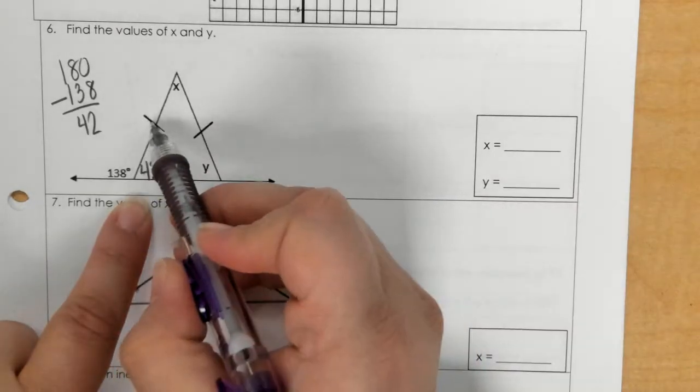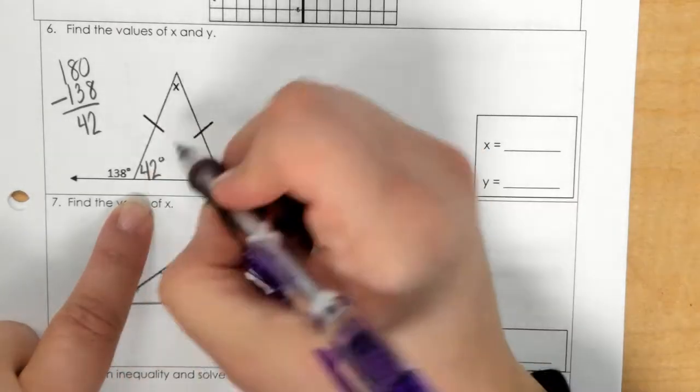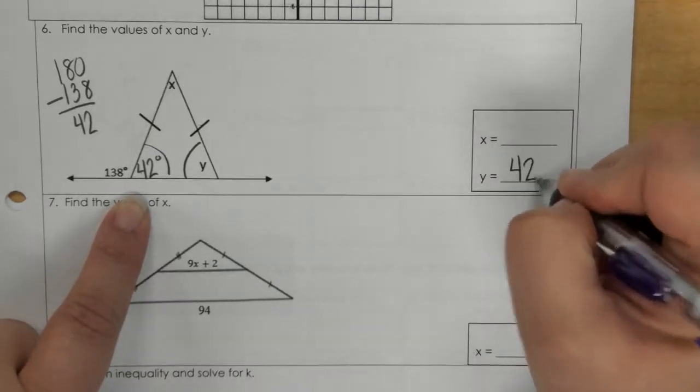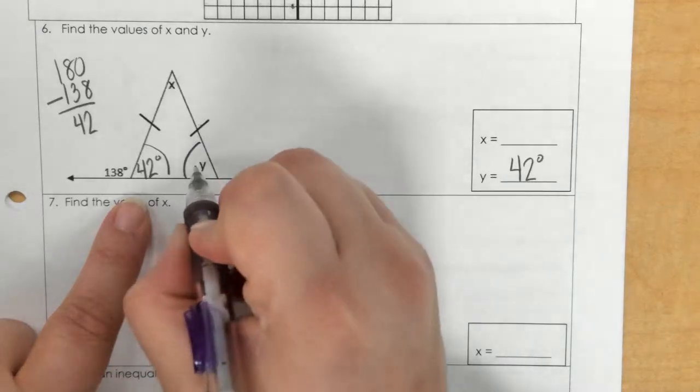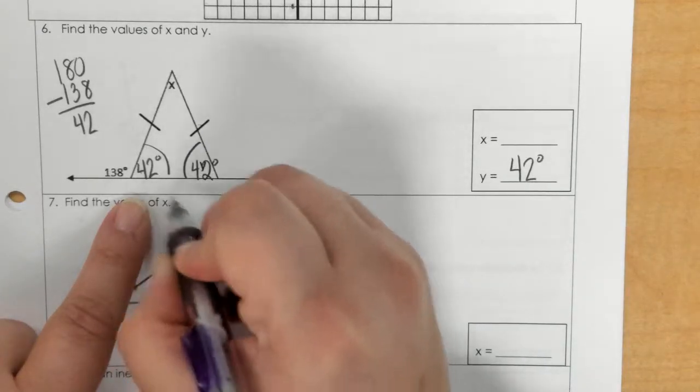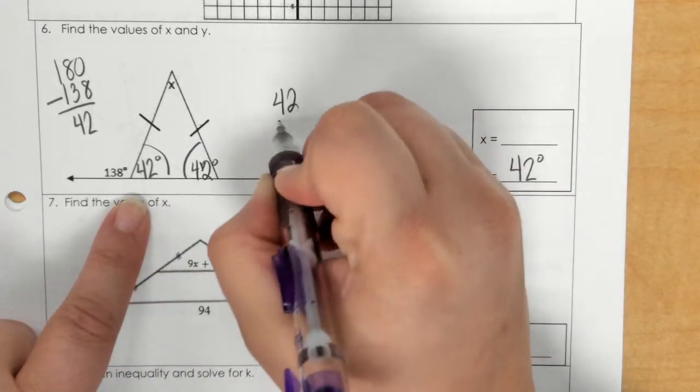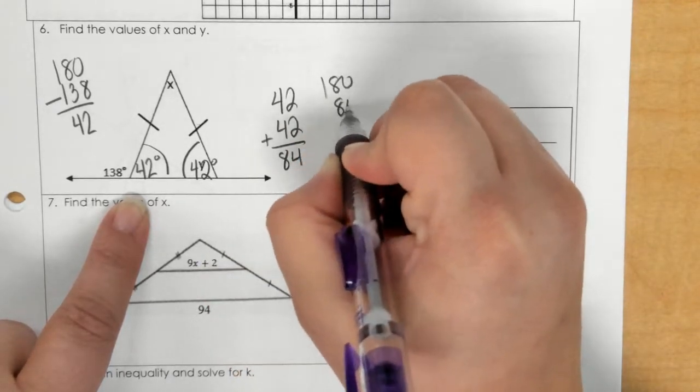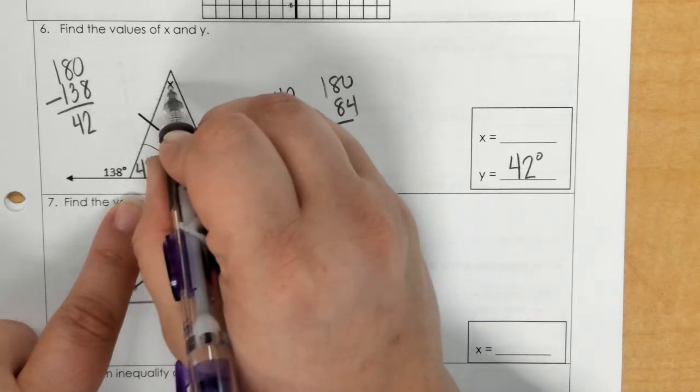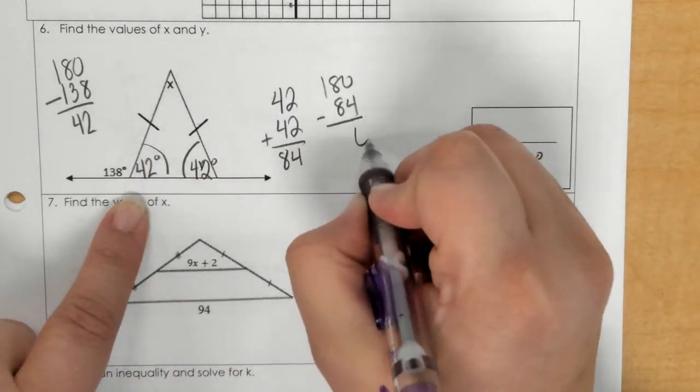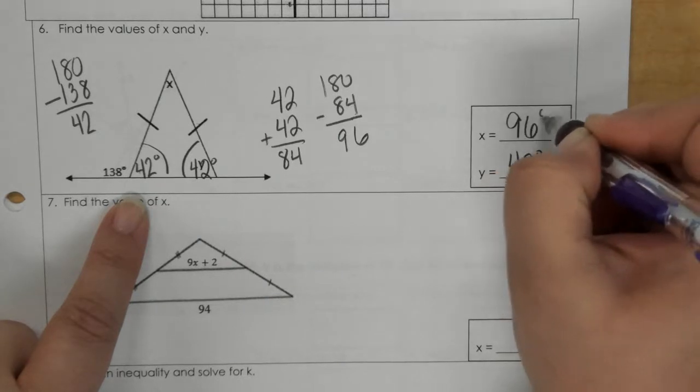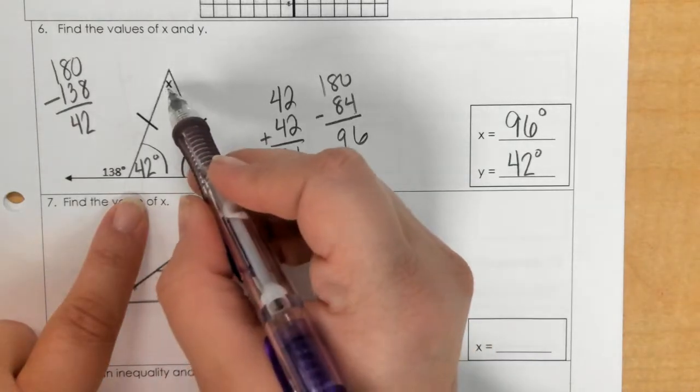But because this is isosceles with these marks here, this and this angle are equal. So if these are both 42, I can add those and then subtract that from 180 to get the top angle measurement. So if I subtract, we get 96. So 96 degrees is angle x.